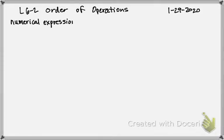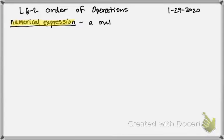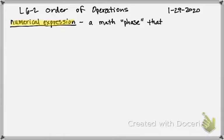If you take those words and think about them individually, 'numerical' means numbers, and 'expression' is a way of stating something. So it's a way of stating numbers. In math, a numerical expression is a math phrase — meaning there's no equal sign, there's nothing you are solving for. If you have numbers only, you can simplify it down to an answer. Or if it has variables, you put numbers in for those variables and solve it. So it's a math phrase that contains numbers and operations.